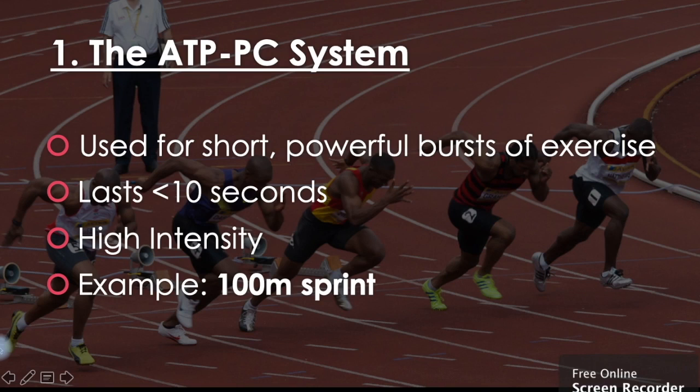Number one, our ATP-PC system. This is used for short, powerful bursts of exercise. It lasts less than 10 seconds. It's used in high-intensity activities. An example would be a 100-meter sprint.